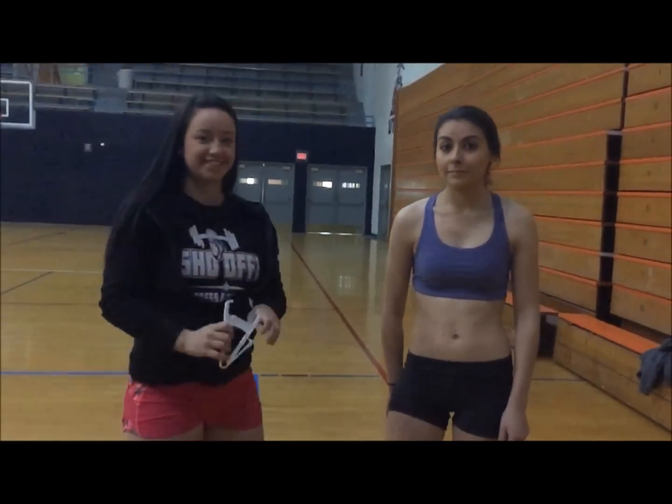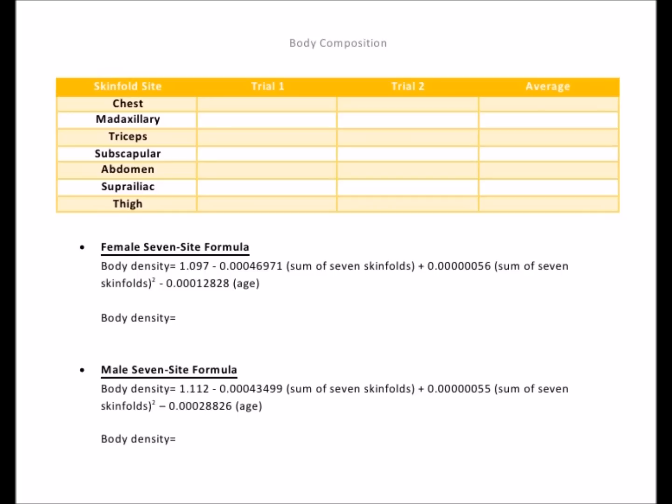Make sure to record all your measurements, and there is your seven-site skinfold test. Here is something that I created to record your measurements that you can follow. You may take up to two trials to get an accurate average, but make sure to rotate through measurements to allow skin to go back to normal thickness and texture. Male and female equations are listed below to help you calculate body density for the subjects.